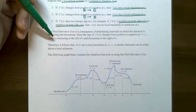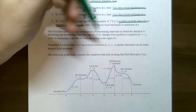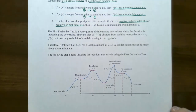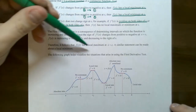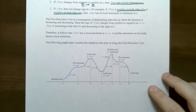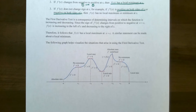We can extend our idea of using a sign chart to identify if there's a local maximum or a local minimum. It's a consequence of determining the intervals of increasing and decreasing for a function. If the derivative changes from positive to negative on your sign chart, we know the function was increasing and then decreasing — that's going to form a local maximum at the critical number. There's a similar statement for a local minimum.